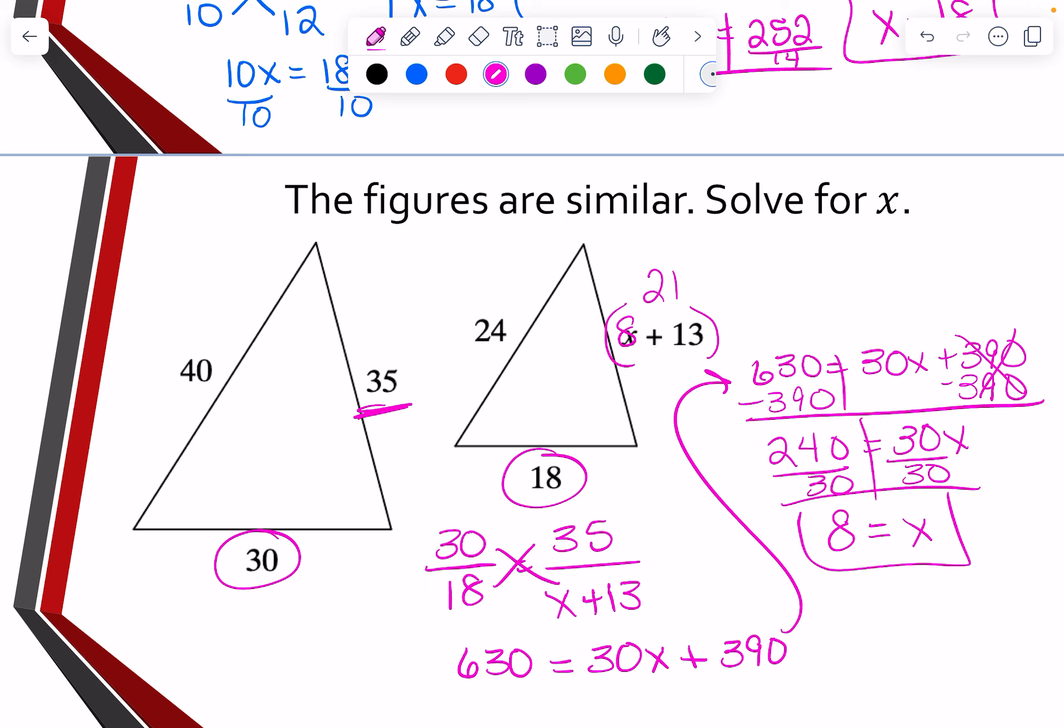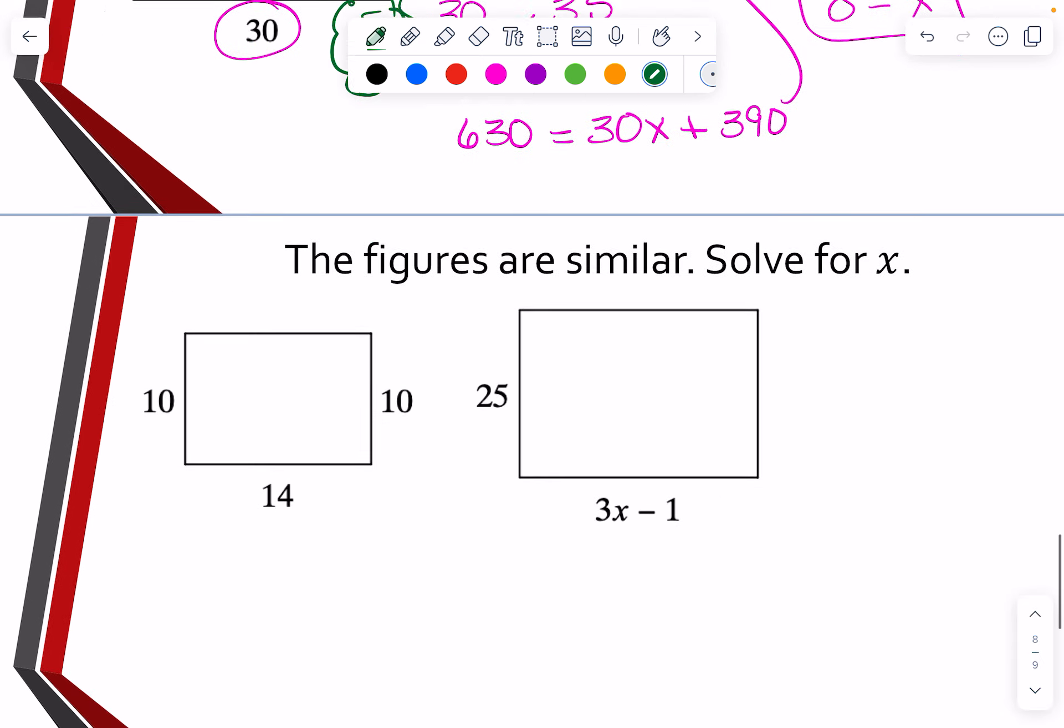Now I do want to show you one little thing on this one. If you wanted to, you could simplify your original ratio. Both of those have a 6. So to make your numbers easier, you could have used the factor, the scale factor of 5 thirds. And then that would make your numbers just a little bit easier as you work through.